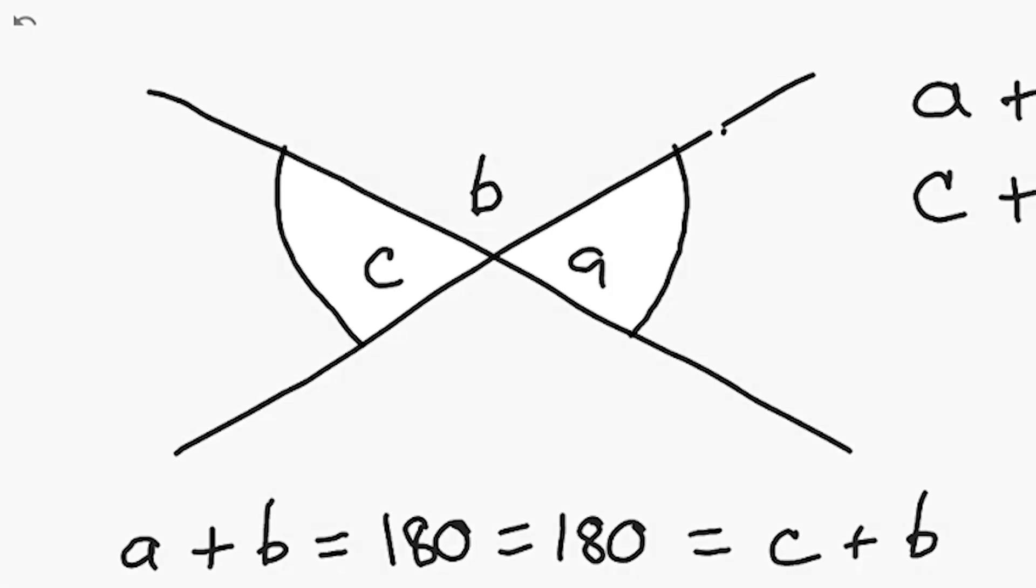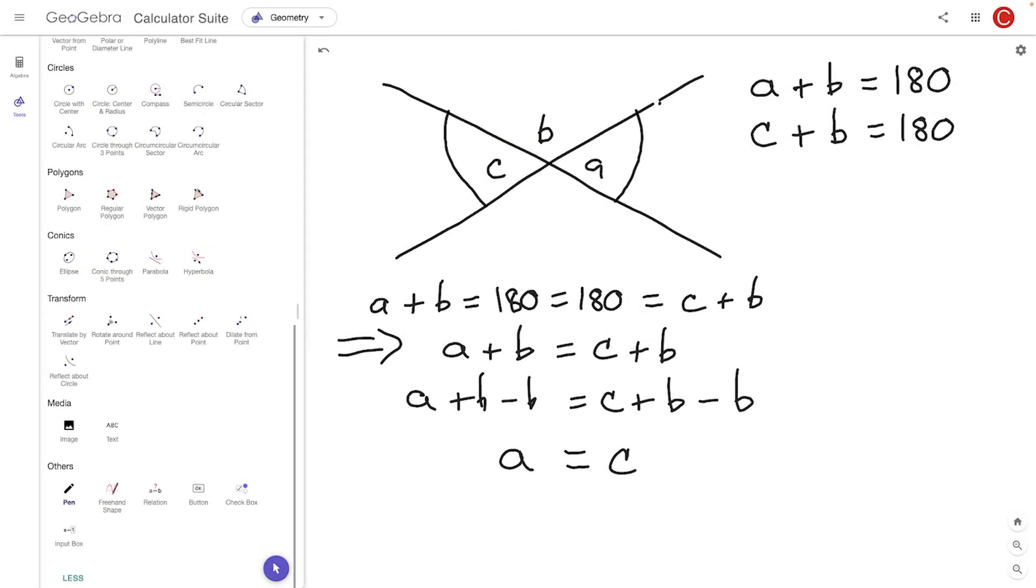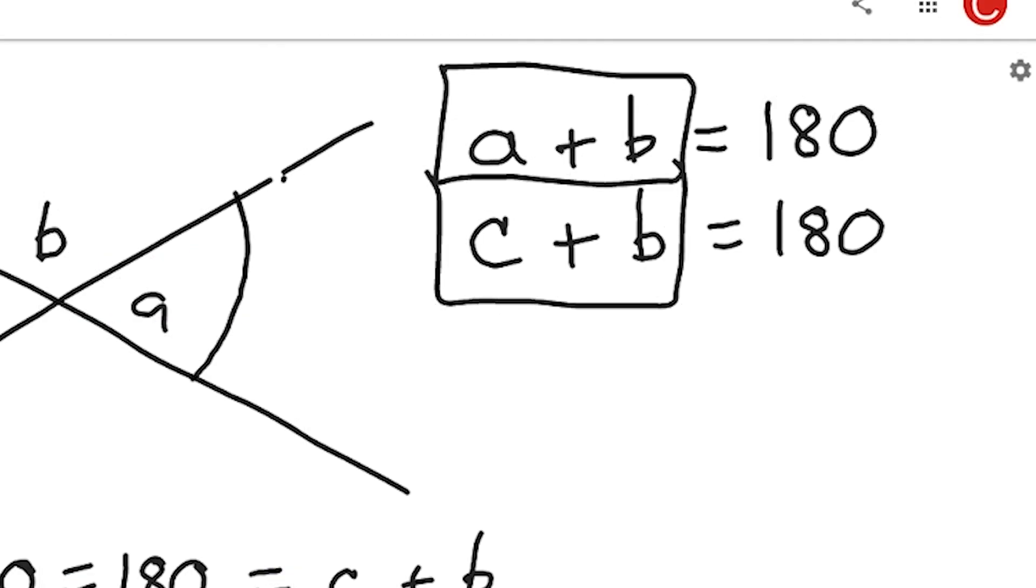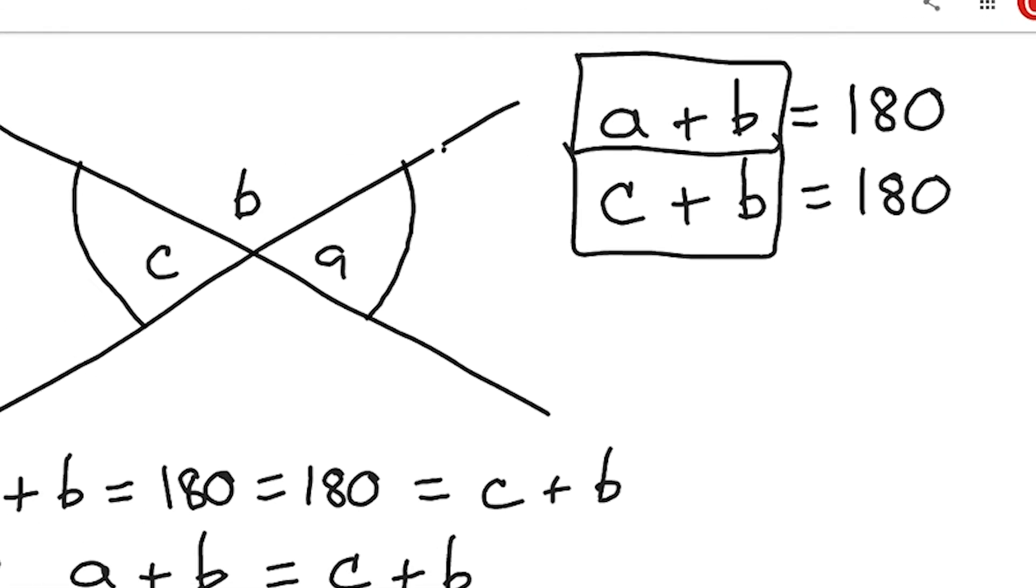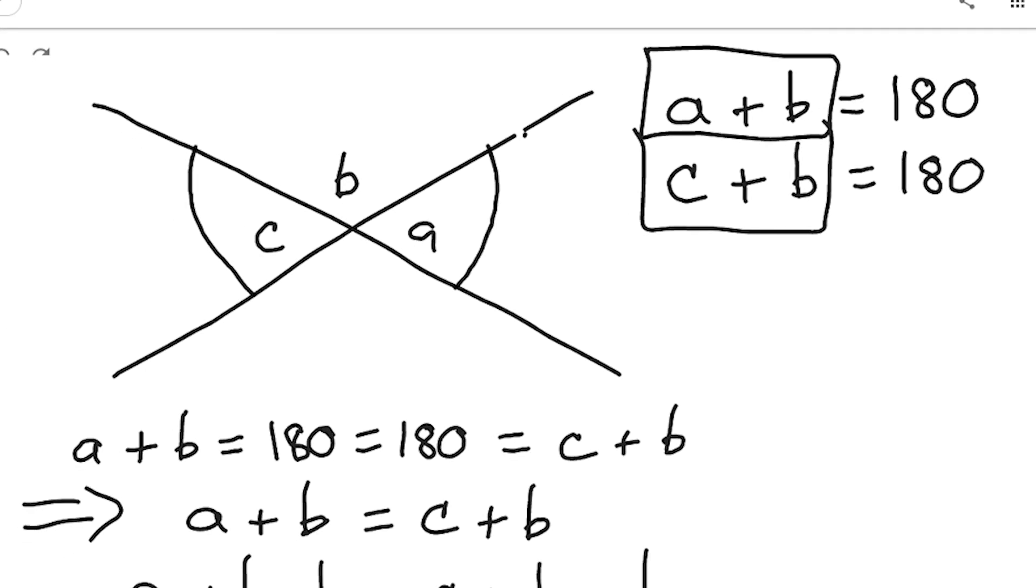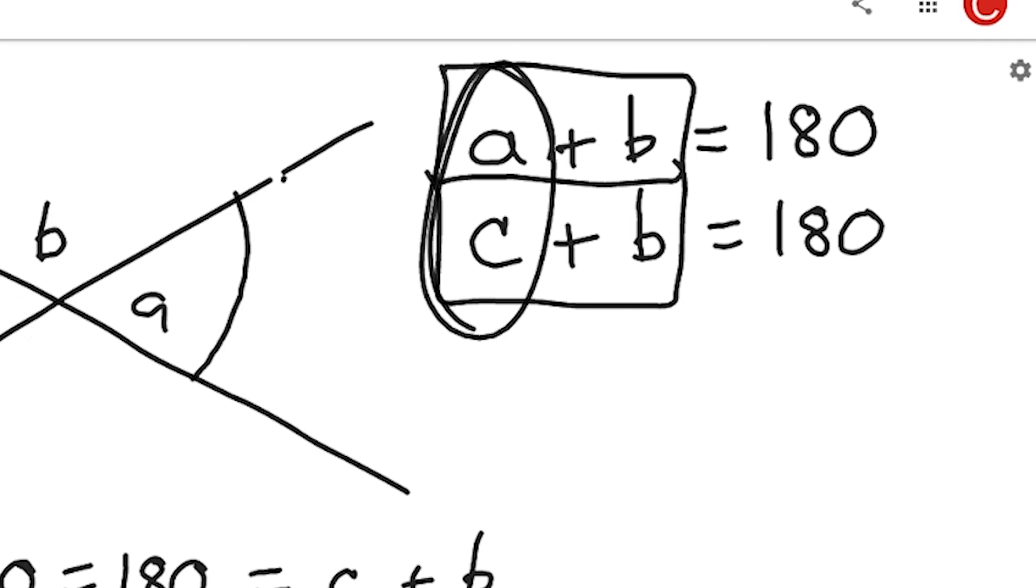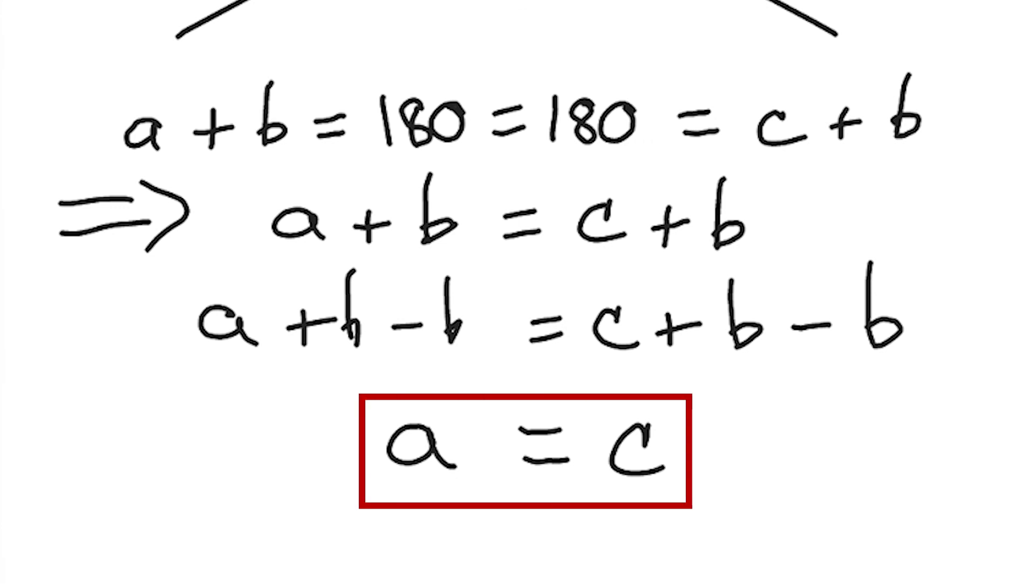And so, what this intuition tells us then is that whenever we have sums that overlap in some way, and here the overlap was B, they both had this B term, as well as equal the same thing, and again, the equaling the same thing part here is both equaling 180, those sums, specifically the parts of those sums that don't overlap, so in our case, it's A and C, will equal each other. So, A equals C.